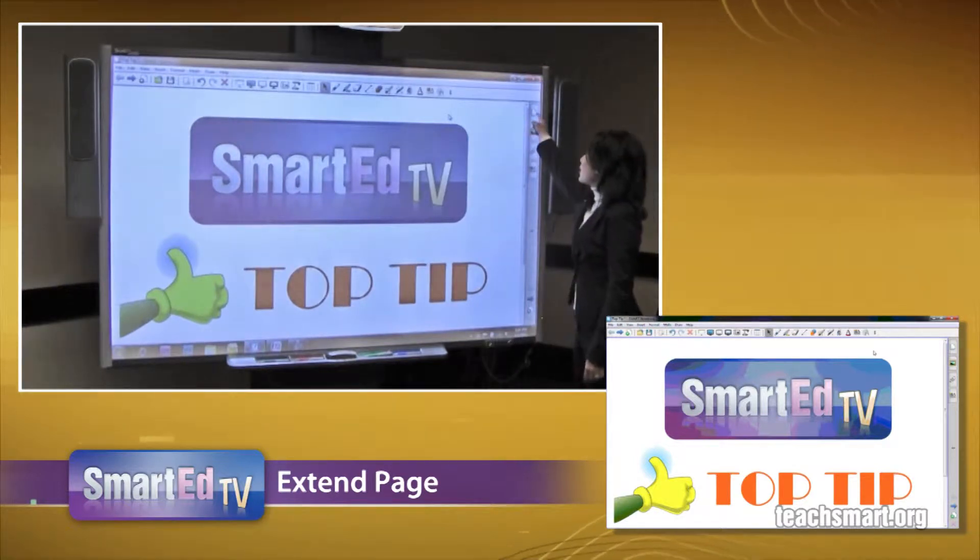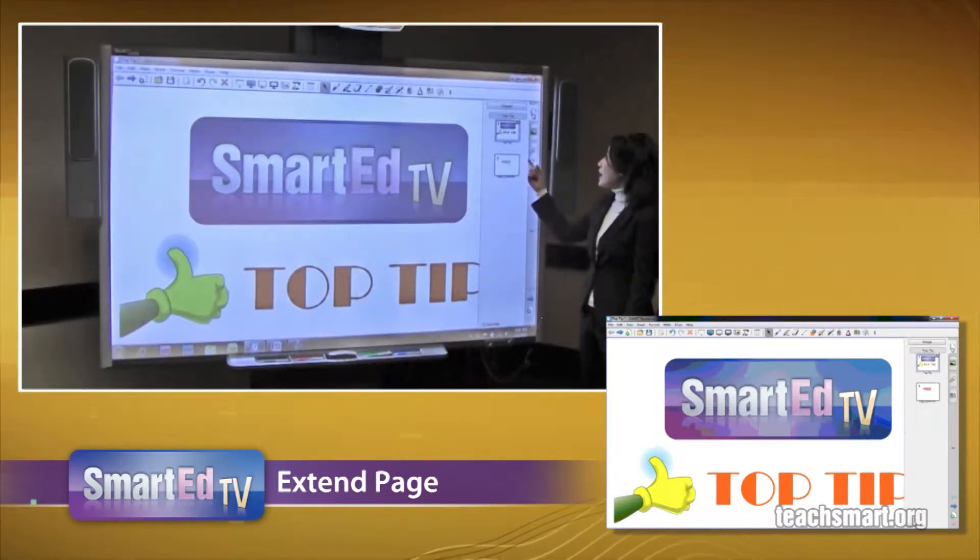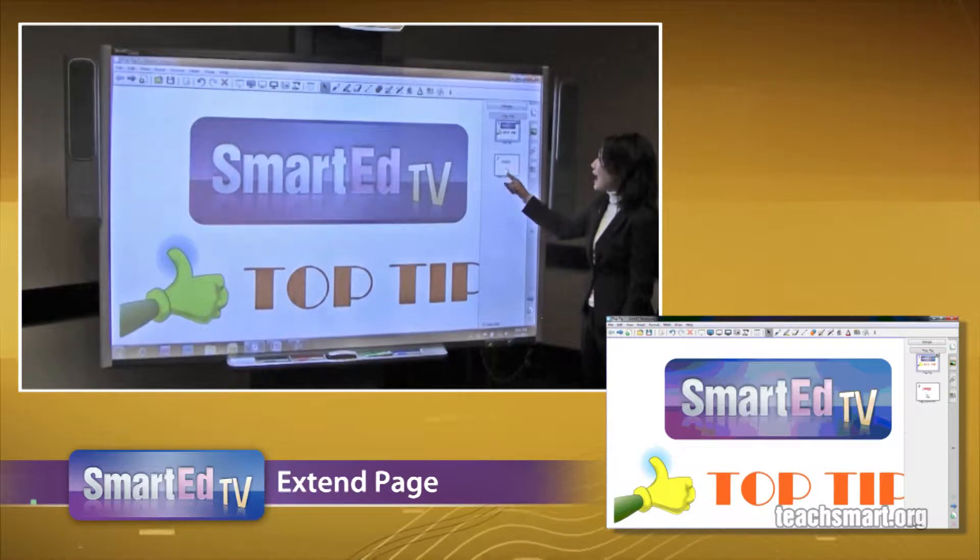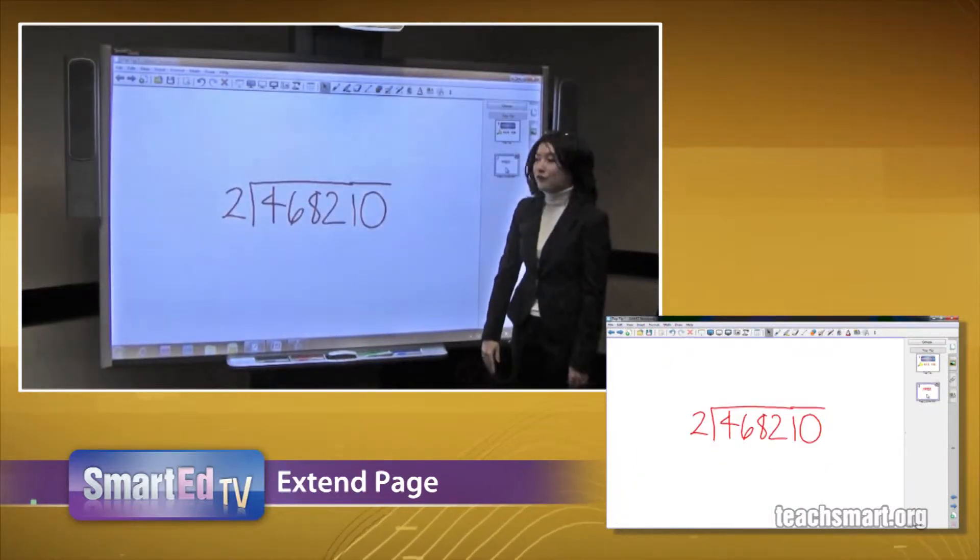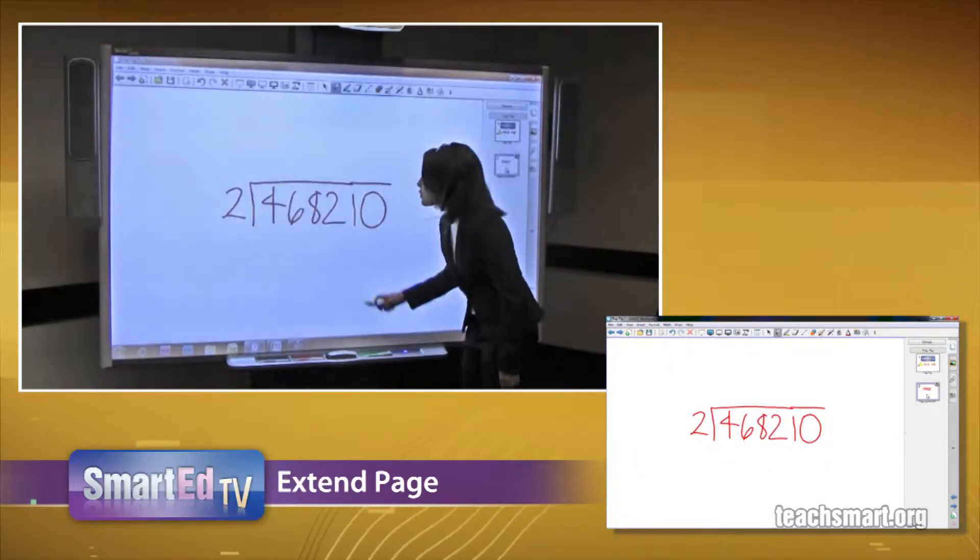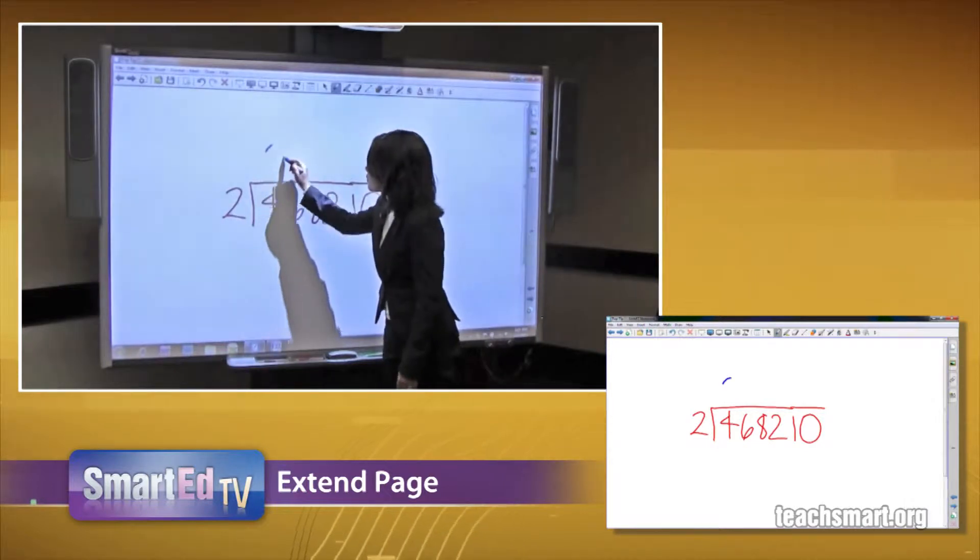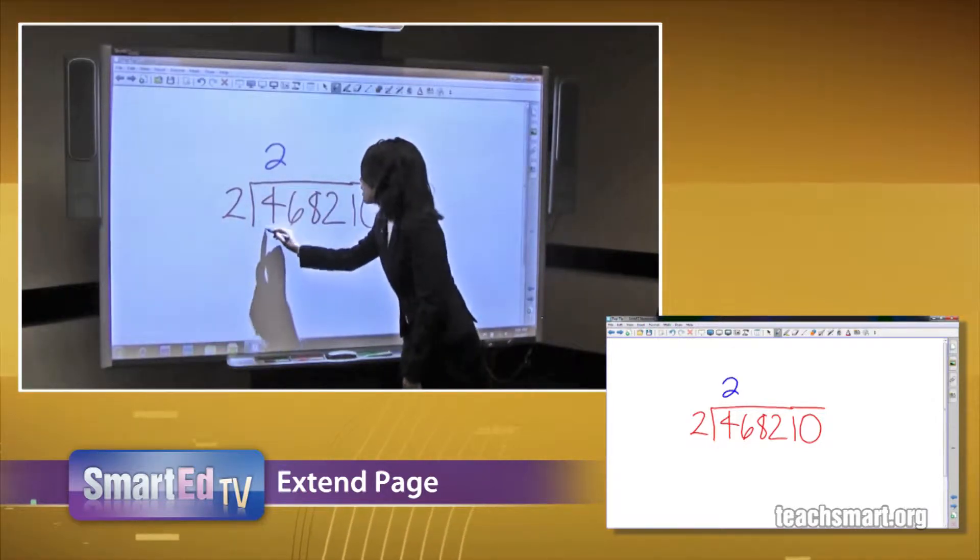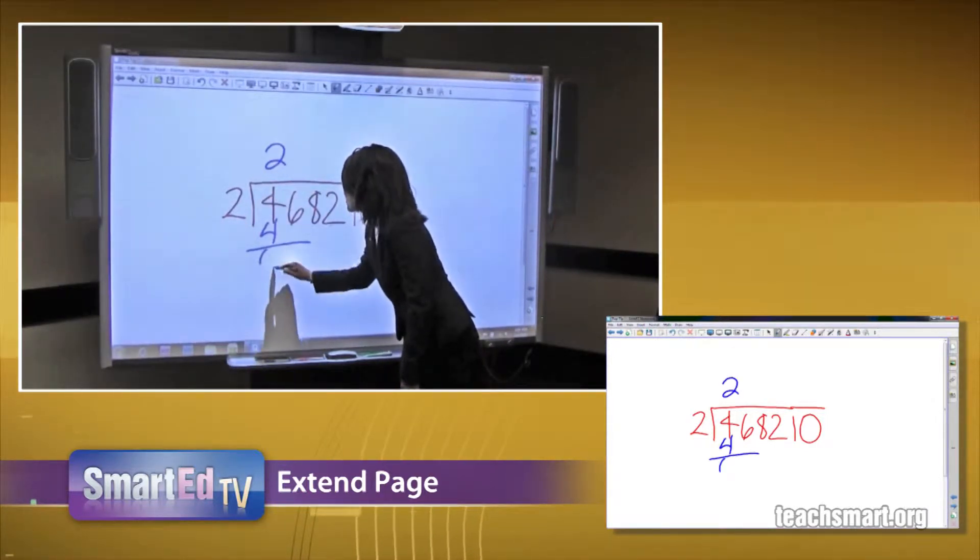Alright. So what we're going to do is go to our page sorter. We're going to click on our page sorter tab. We're going to click on page two where I have a math problem that's already ready for us to complete. So what I'm going to do is pick up one of my pens from the pen tray. We can go in and start completing that problem. So we'll see if I can do this kind of math.